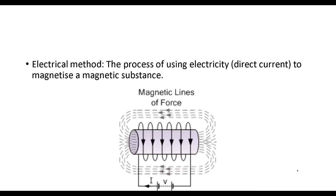The other method is by using electricity. You will connect your magnetic substance to DC current, as shown. When you turn on the switch and let current flow through the wire, this is called a solenoid — meaning there are many coils in the form of loops. When current passes through the solenoid wrapped around your magnetic substance, the substance becomes magnetized, and you can see magnetic field lines have formed around it.